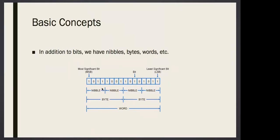We also talked about the definition of a nibble. A nibble is four bits together. If you have eight bits together, we call them a byte. A nibble is four bits, so what is the largest number you can create using a nibble? It is 1111, which if you calculate is 15. Nibbles get values between zero and 15.